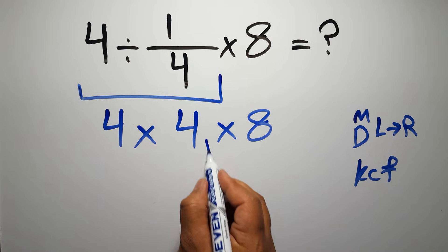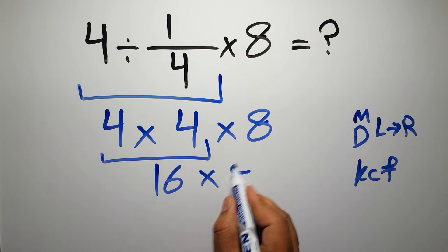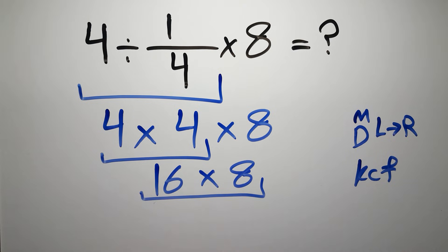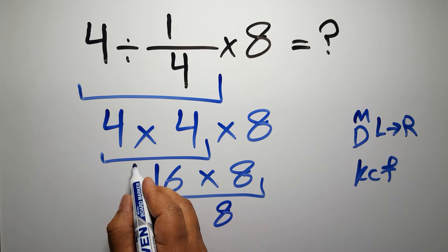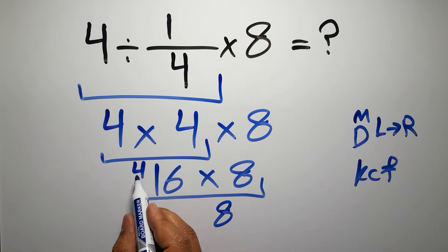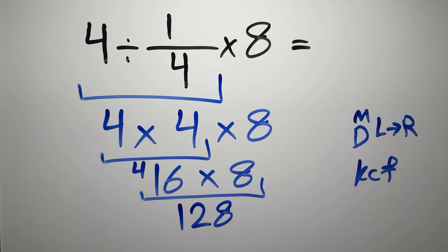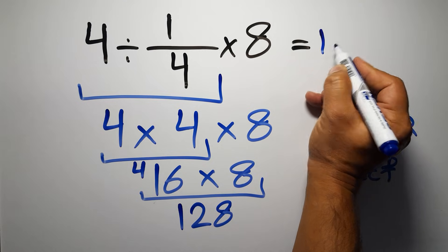4 times 4 gives us 16, and 16 times 8: 8 times 6 gives us 48, we write 8 here and carry 4. 8 times 1 gives us 8, and 8 plus 4 equals 12. So we have 128, and this is our final answer. The correct answer is 128.